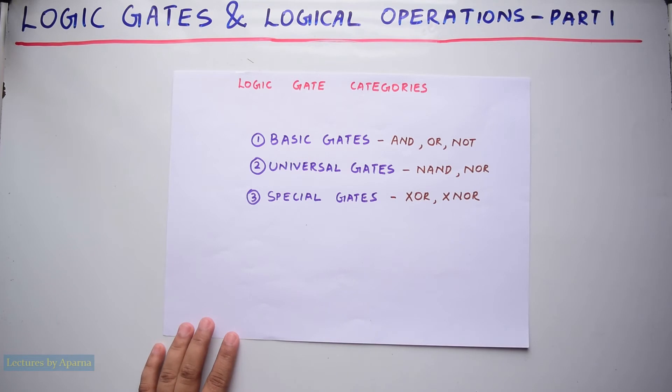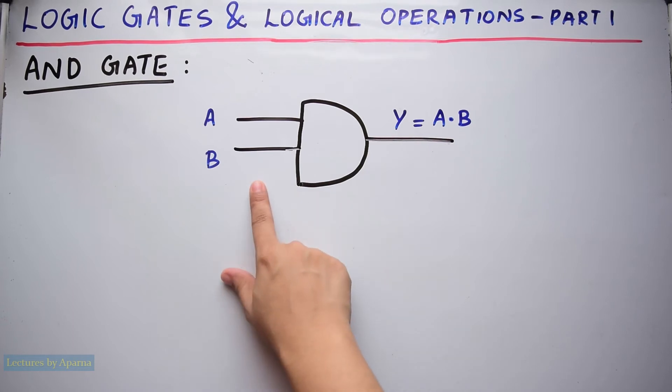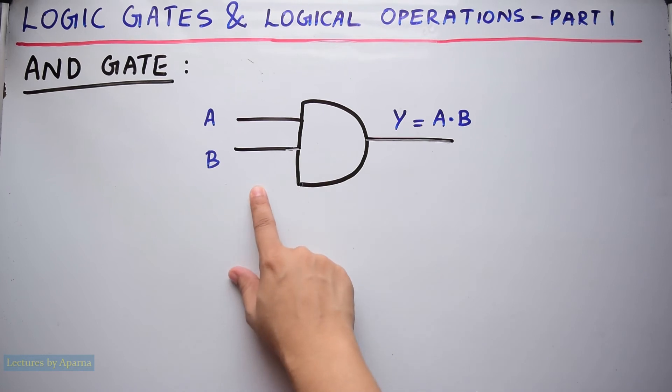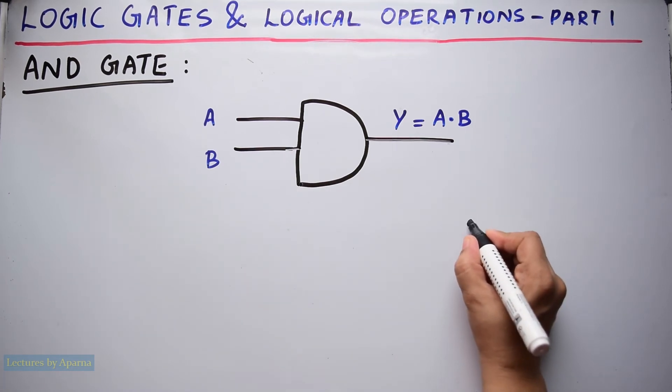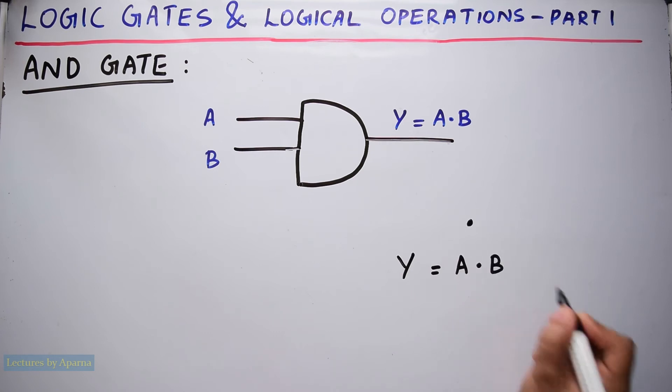First, let us see AND gate. This is the symbol of AND gate. It has two inputs and one output which is a logical AND of those two inputs. AND operation is represented by a dot, so it can be written as Y equals A dot B.